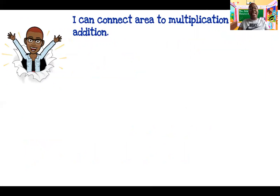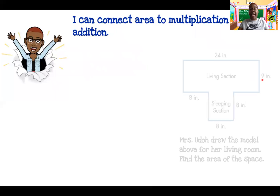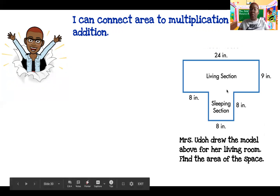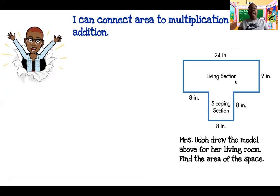All right, Middles, you're up next. Remember, all week we have been connecting multiplication and addition to the area formula. Here's our problem for today. It says, Mrs. Udo drew the model above of her living room. Find the area of the space. So here's the picture of my living room and we want to know the area of the whole space. And this week we've talked about complex or composite figures and finding the area.